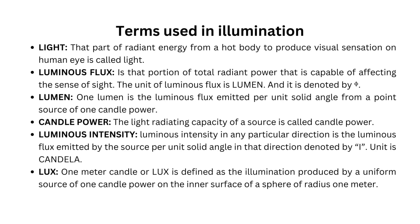Terms used in illumination: Light is that part of radiant energy from a hot body that produces visual sensation on the human eye. Luminous flux is that portion of total radiant power that is capable of affecting the sense of sight. The unit of luminous flux is lumen. One lumen is the luminous flux emitted per unit solid angle from a point source of one candle power.